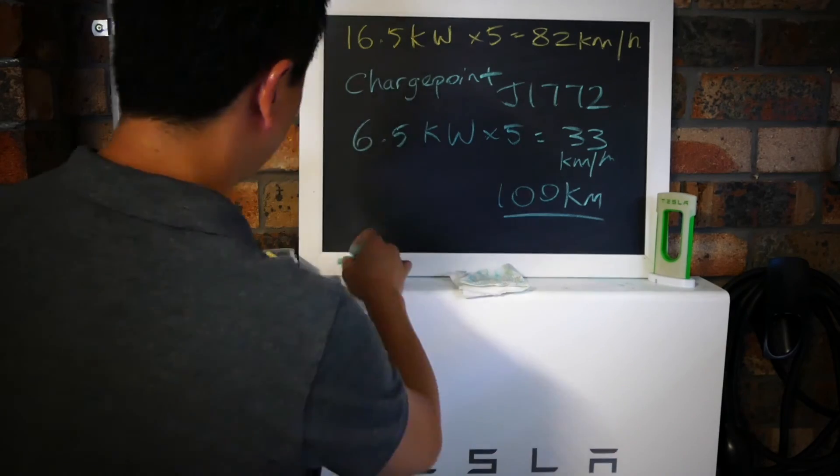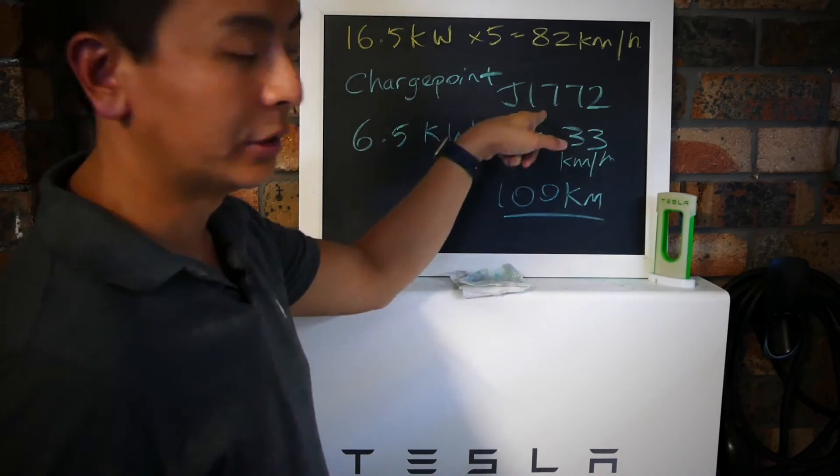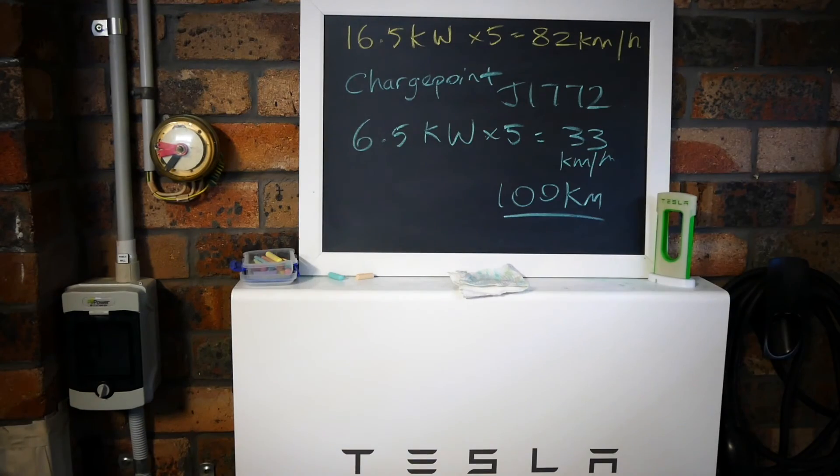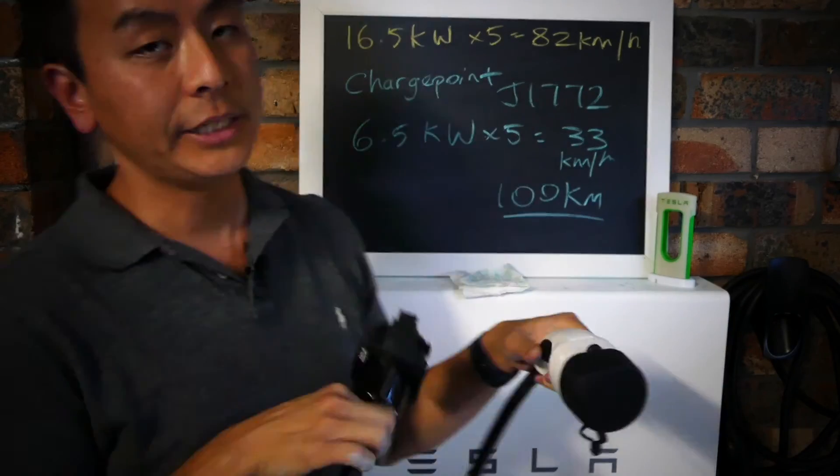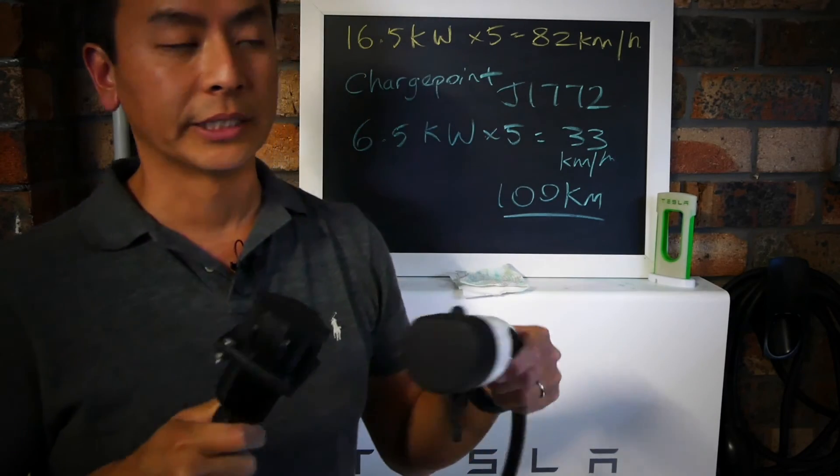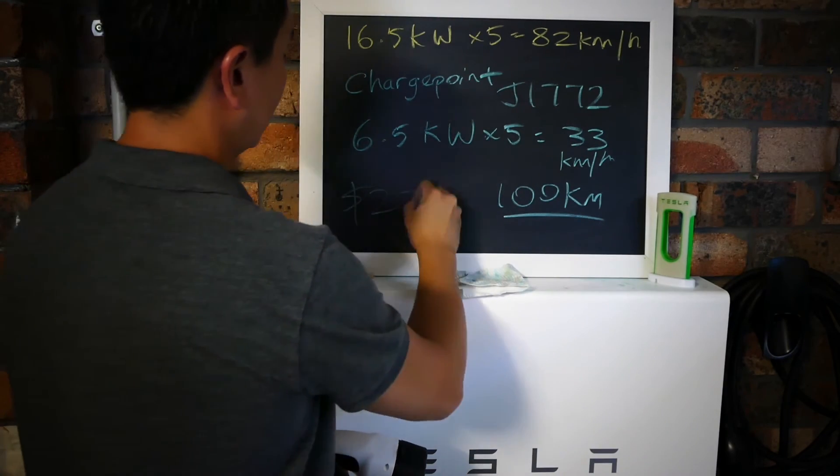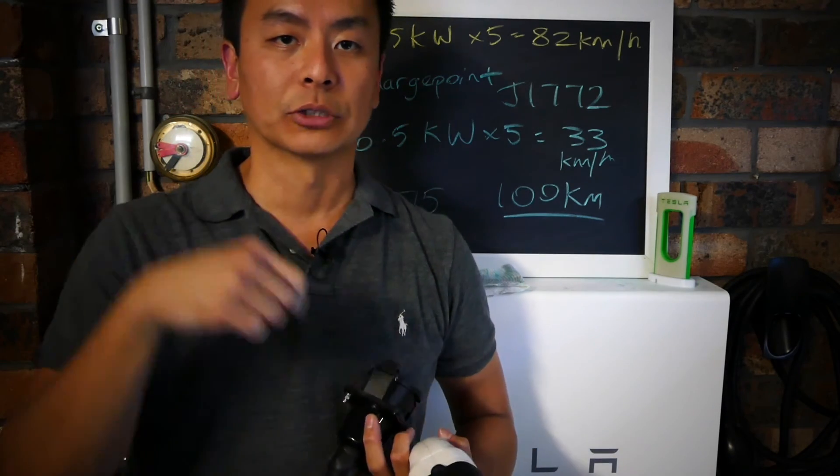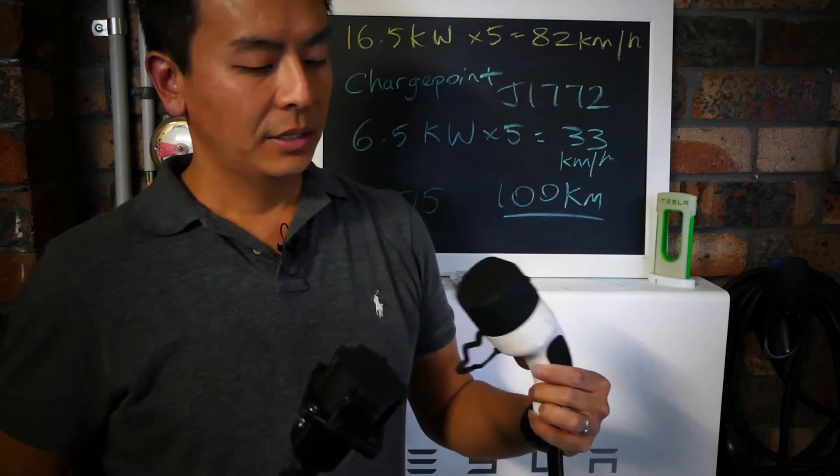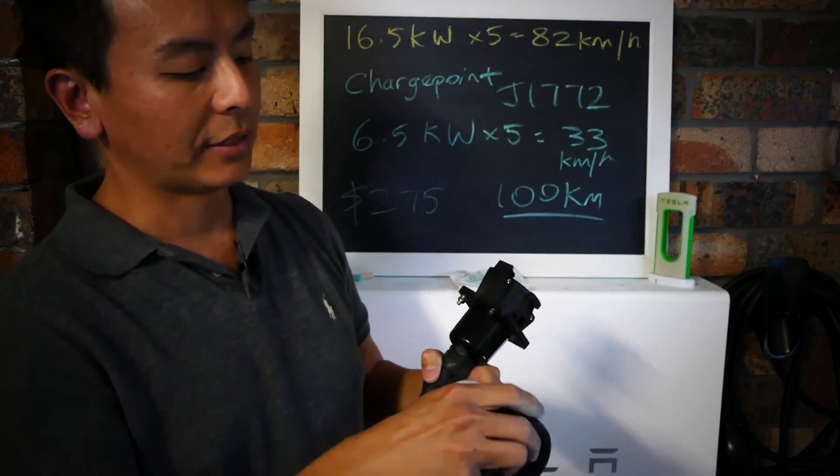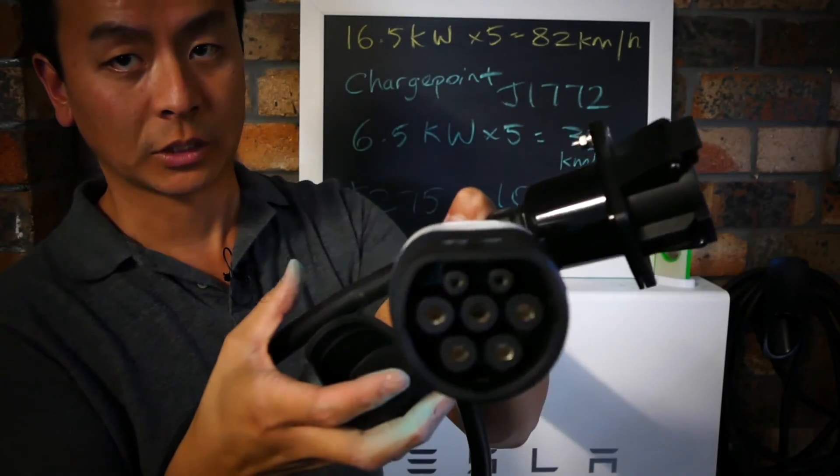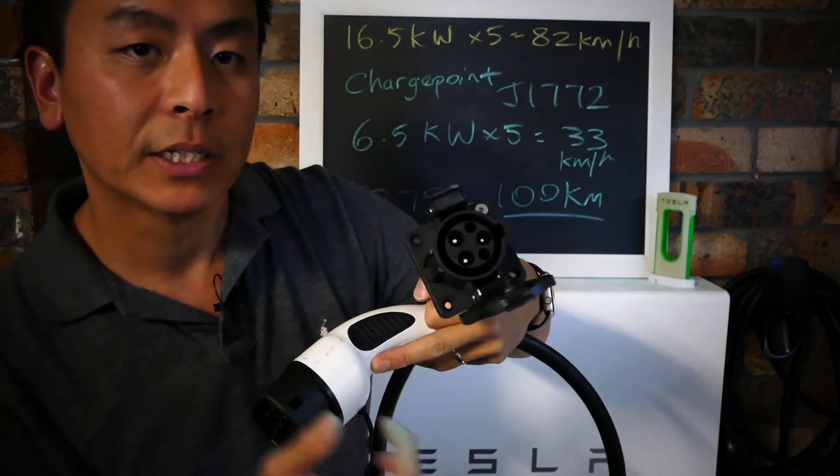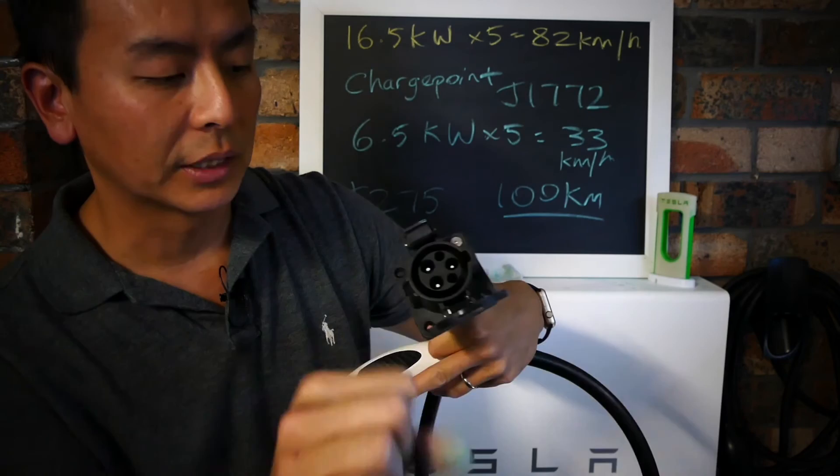To use that ChargePoint, you need a J1772 adapter. These don't come with your car, you've got to buy these separately. They cost $275 from somewhere like EVnomics.com.au. It's pretty straightforward - one end plugs straight into your car with a Tesla charging port, and the second one is where the shopping center's ChargePoint plug plugs into.